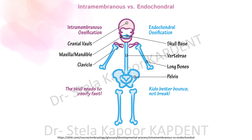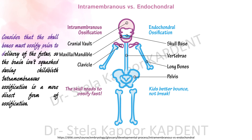Here is an illustration that differentiates the sites of ossification. For intramembranous ossification, the memory aid is that the skull needs to ossify fast, considering that the skull bones must ossify prior to the delivery of the fetus so the brain isn't squashed during childbirth — because intramembranous ossification is a more direct form of ossification.